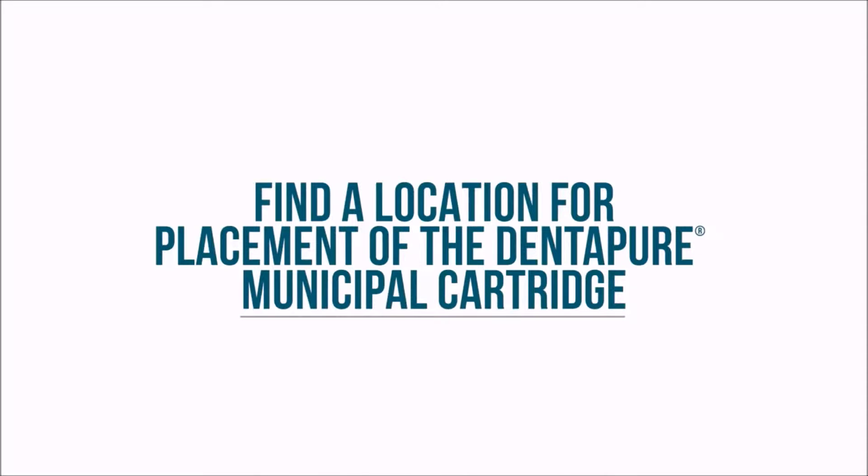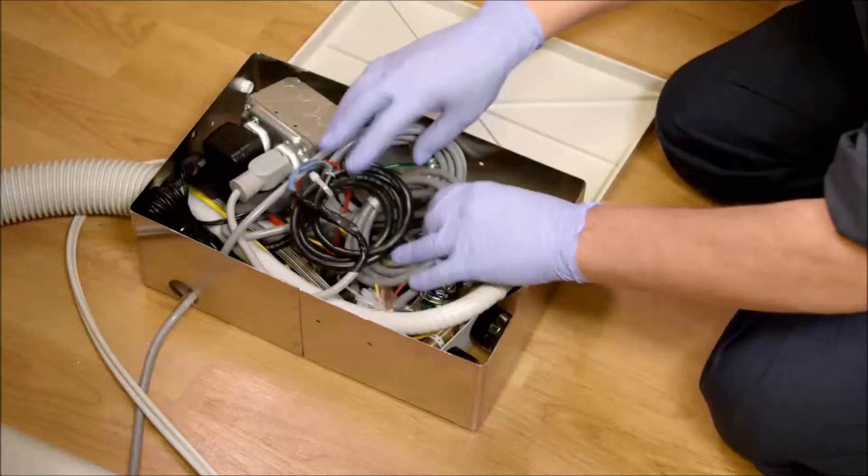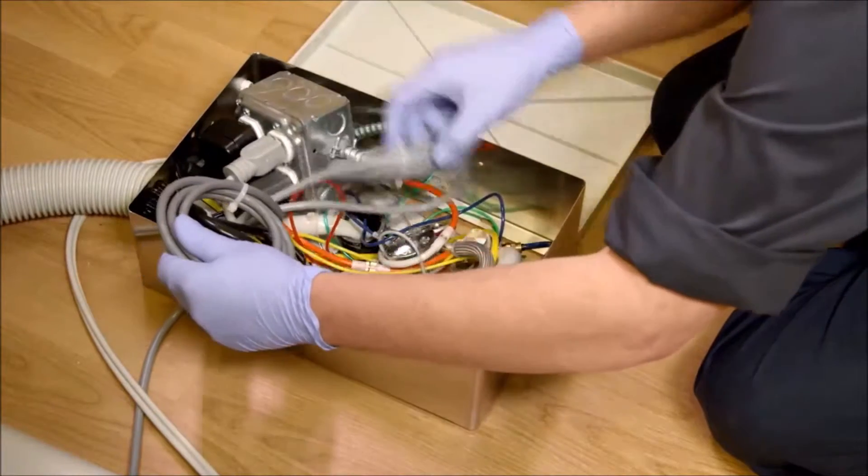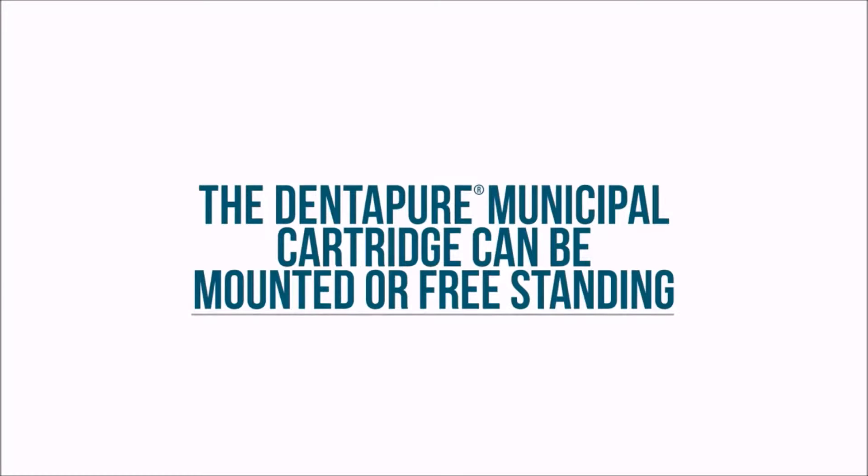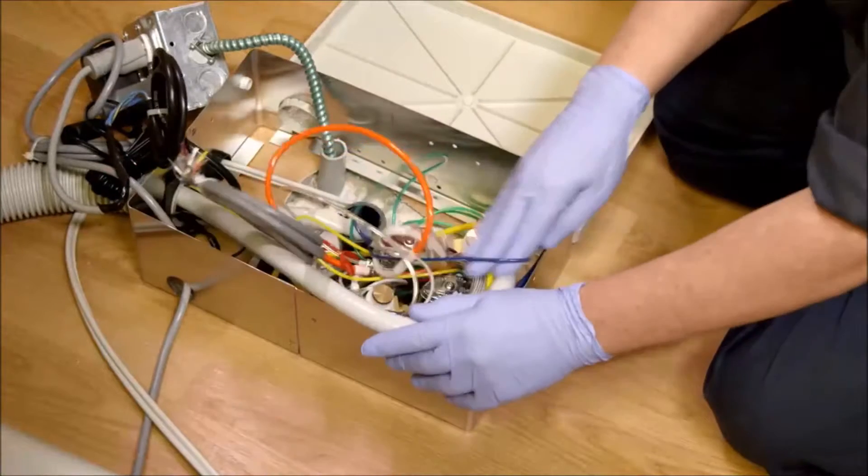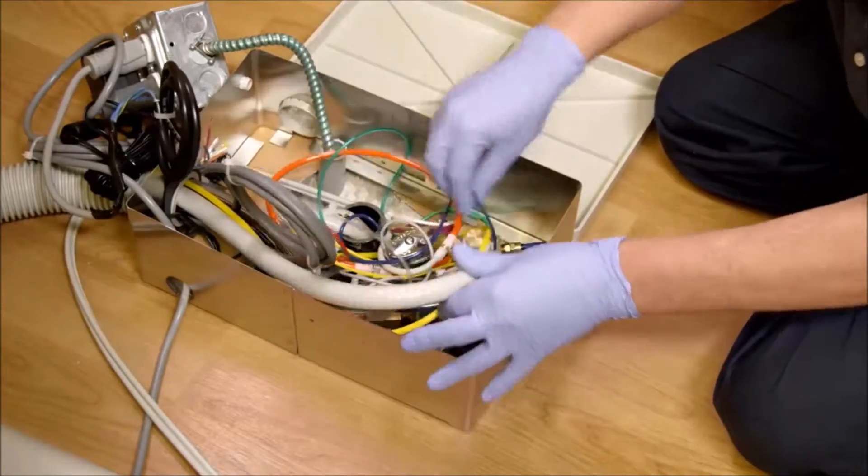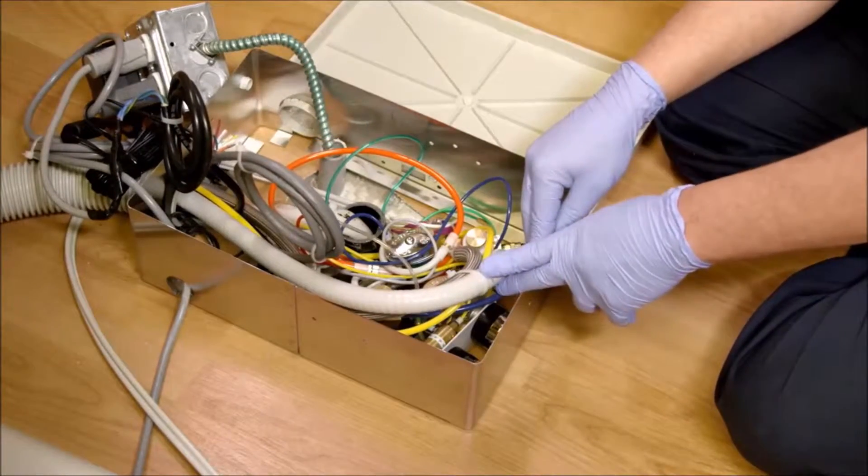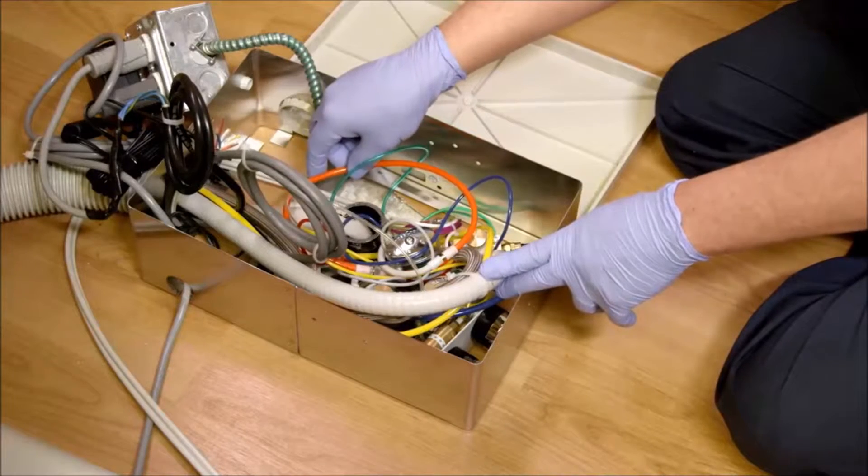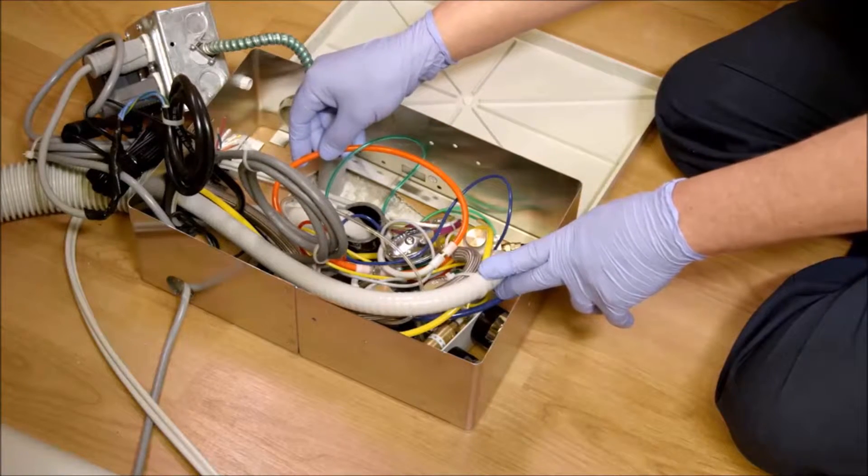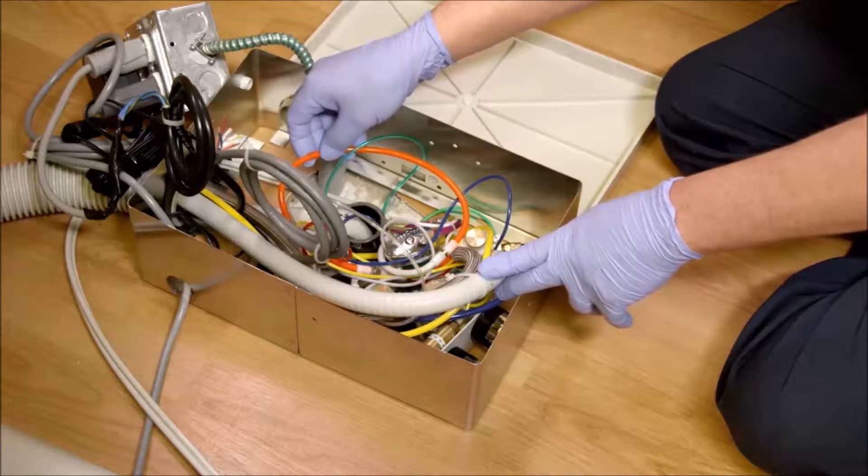Next, find a suitable location for placement of the Municipal Cartridge. Keep in mind that the cartridge could be mounted or free standing inside the junction box. This location should be able to fit the cartridge while avoiding putting pressure on other tubing, pipes or fittings. Placement should also avoid causing kinks in the tubing and be near the water regulator.